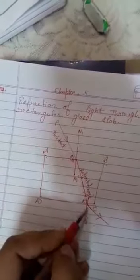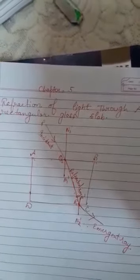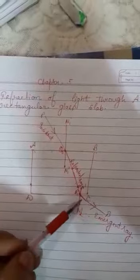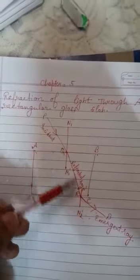This new ray is called the emergent ray. So ray PQ is the incident ray, QR is the refracted ray, and RS is the emergent ray. Both the incident ray and emergent ray are always parallel and in the same direction.